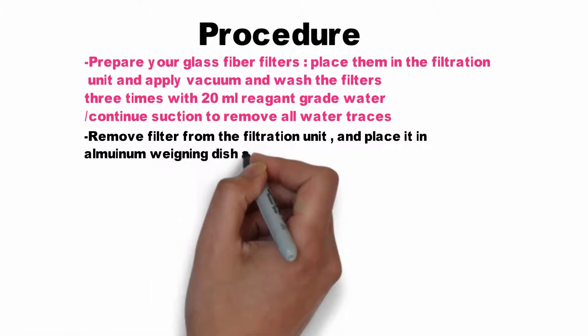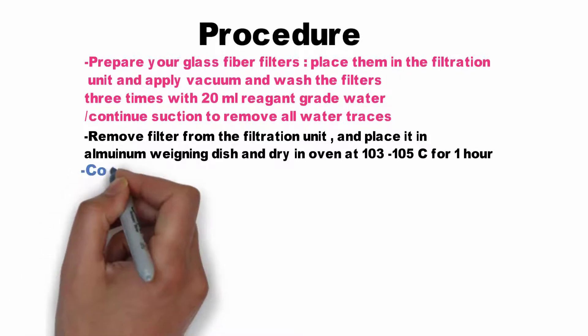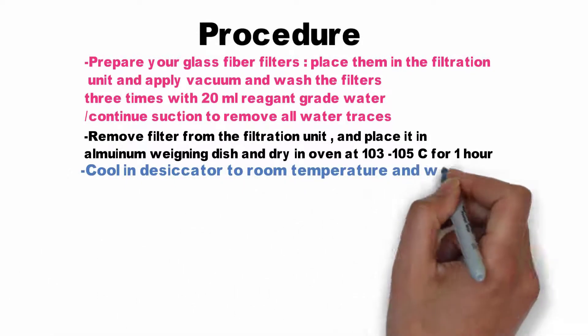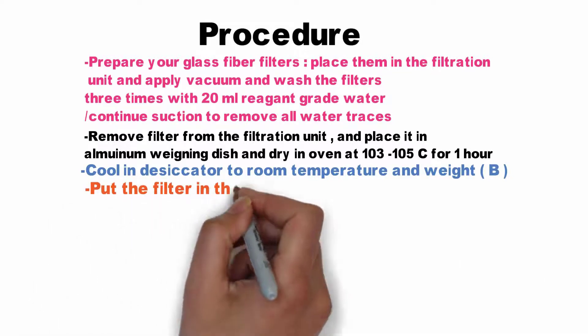Place it in the aluminum weighing dish and dry it in the oven at 103 to 105 degrees Celsius for one hour. After that, cool it in a desiccator to room temperature and take the initial weight.